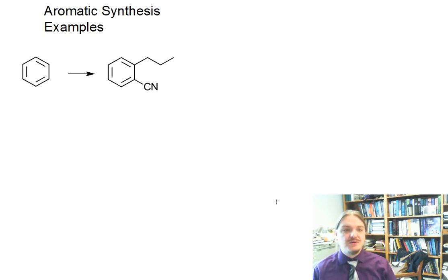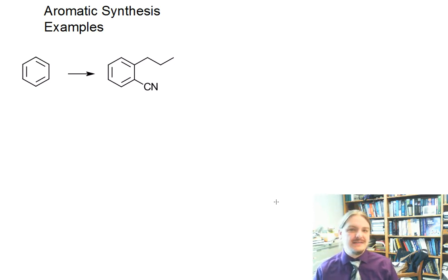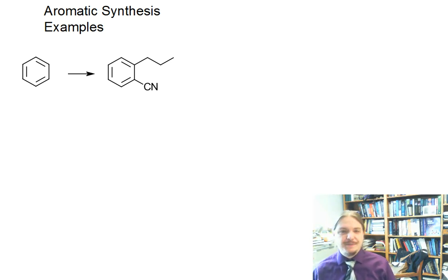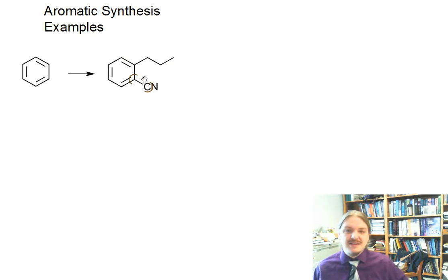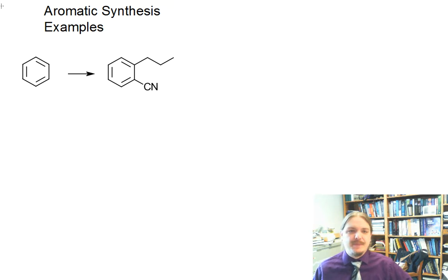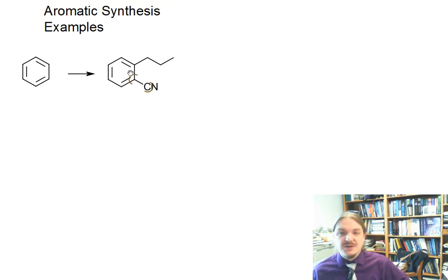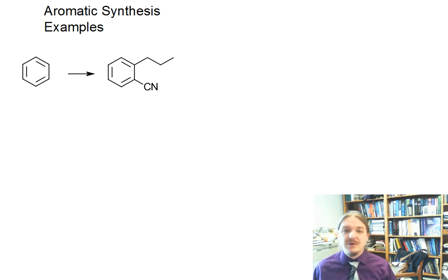Hello. In this video, I'm going to talk about some synthesis of substituted arenes, working through some more complicated examples that hopefully combine several of the topics from the earlier videos in this series. In my first example, we're going to talk about synthesizing ortho-propylbenzonitrile from benzene. And so this looks like it might be pretty straightforward — they're only adding two functional groups, but there are a couple of tricks that we need to be aware of.